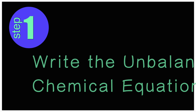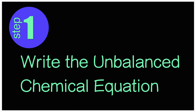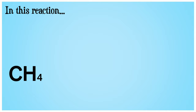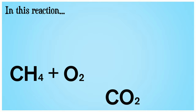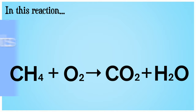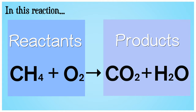Step 1: Write the unbalanced chemical equation to show the reactants and the products. In this reaction, methane, CH4, reacts with oxygen, O2, to form carbon dioxide, CO2, and water, H2O. Note that the reactants always go on the left side of the arrow. The arrow indicates the direction of the reaction. The products go to the right side of the arrow.